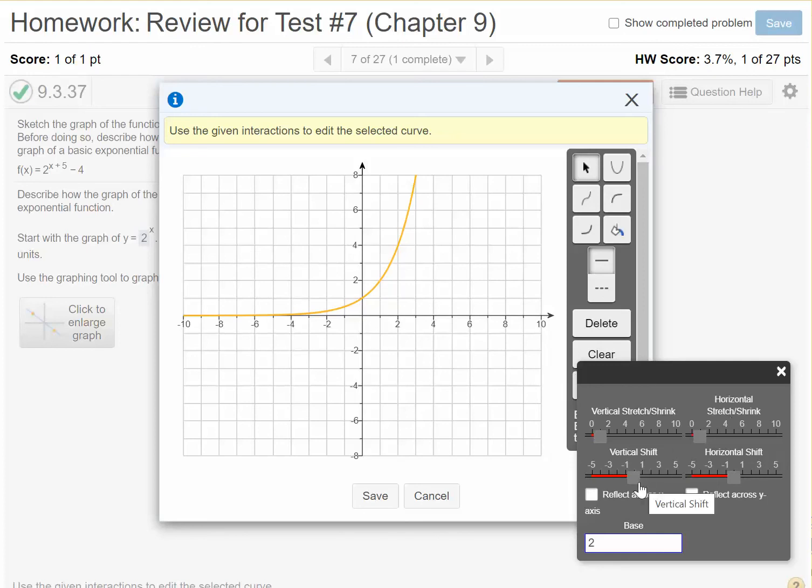And then we want to do a vertical shift down 4. Now, these are for shrinks. We don't have a shrink. We do have a vertical shift, though. We're going to go down 4. So that would be negative 4. And you'll notice the graph shifted down.